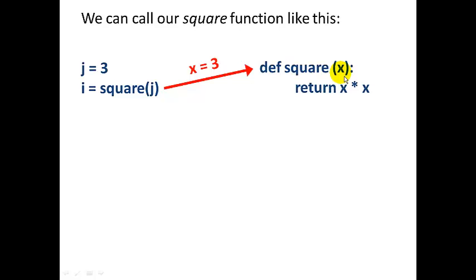Because j is equal to 3. So at this point, x equals 3. And then we return x squared, or 9. And we assign that value 9 to i. So it's a pretty simple function call and then return value.